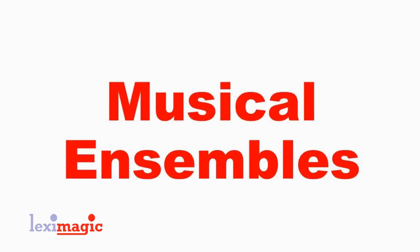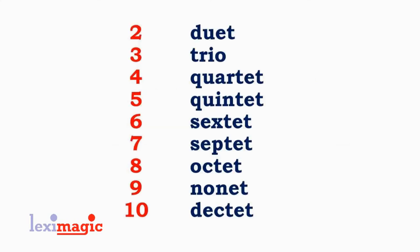Next, we look at words which describe musical ensembles having different numbers of artists. A duet is a musical group of two people. A trio is a musical group of three people. A quartet has four musicians. A quintet has five. Sextet has six. Septet has seven. Octet has eight. Nonet has nine. And a dectet has ten musicians.